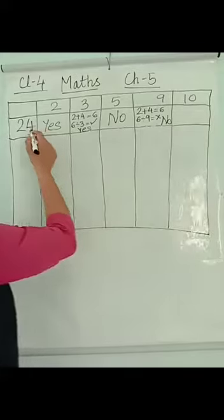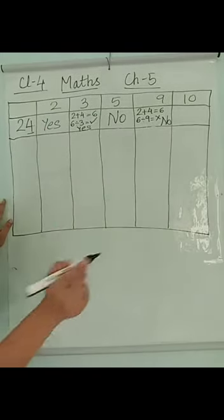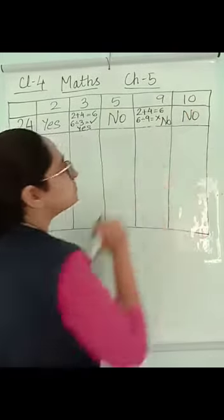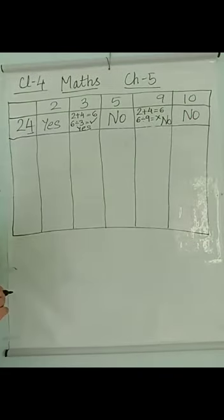For 10, the ones place should have 0. There is no 0. So no.